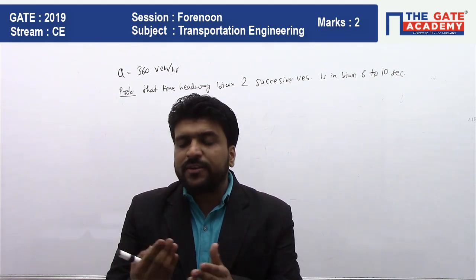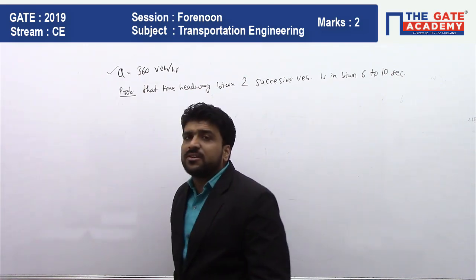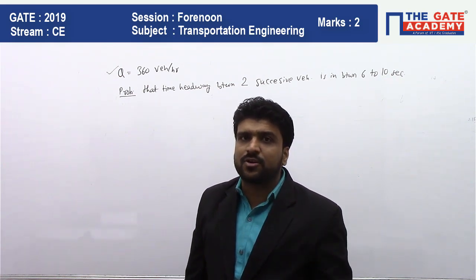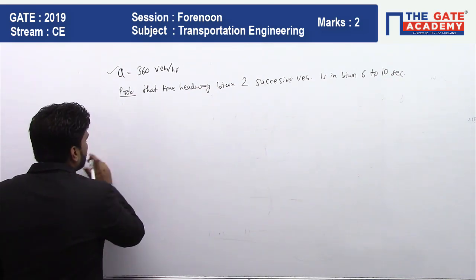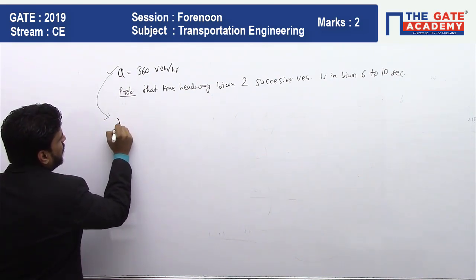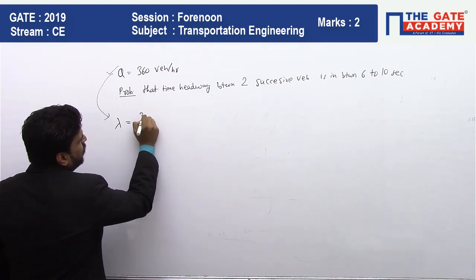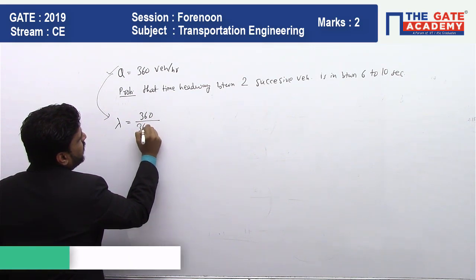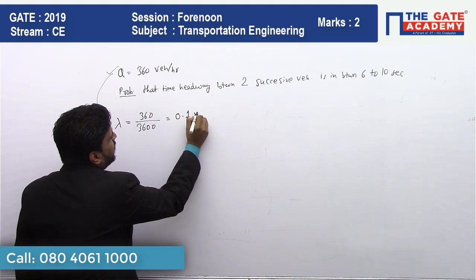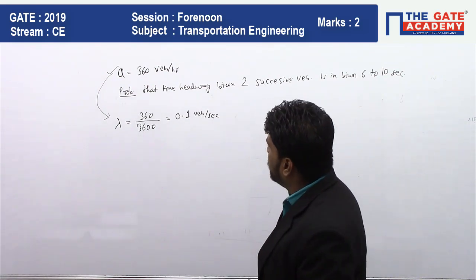Time headway means the time difference between two successive vehicles. The flow given is 360 vehicles per hour, meaning 360 vehicles arrive in one hour. Lambda is the arrival rate of vehicles per second. To calculate: 360 vehicles in 3600 seconds equals 0.1 vehicles per second. So lambda = 0.1 vehicles per second.